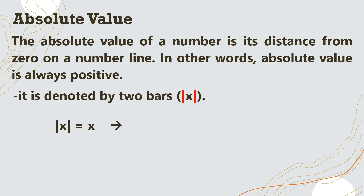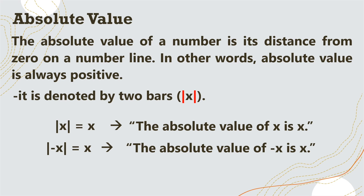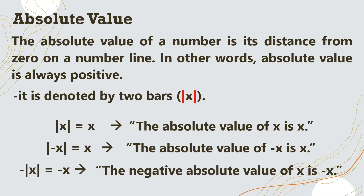The absolute value of x is equal to x — that's why the answer is positive x. How about this one? The absolute value of negative x is equal to x. Since we are talking about distance, even if we have negative, the absolute value is positive. And we have the negative absolute value of x is equal to negative x — the negative absolute value of x is negative x.